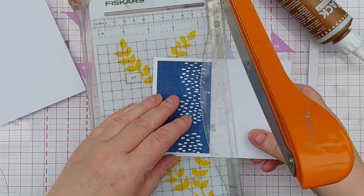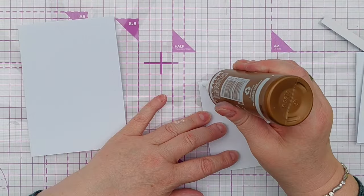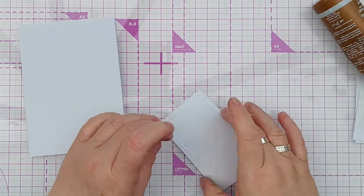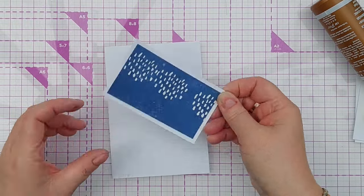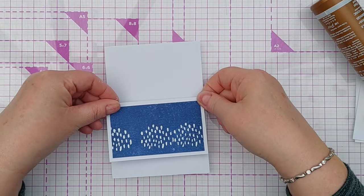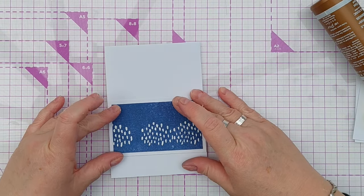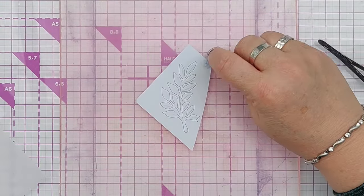I then used high tack glue to stick the panel down in the bottom half of my card blank. Initially I was going to use it with the marks at the top of the panel, but as I was about to stick it down I thought actually no, I want to use it the other way up because of that little gap that I left when I stamped. I thought that would look best on the left hand side and I could add my focal point over that gap.